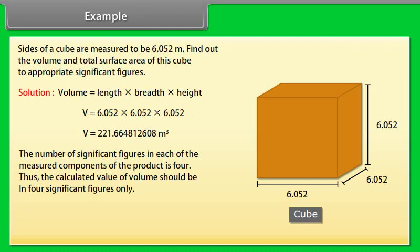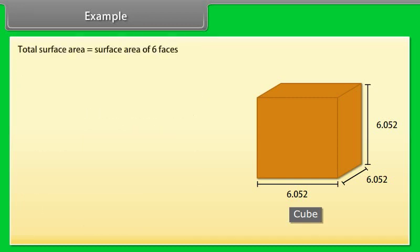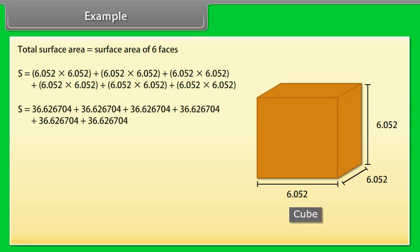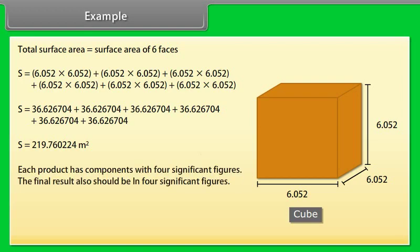Thus V is equal to 221.7 meter cube. Total surface area is equal to surface area of six faces. After calculation we get S is equal to 219.76 meter square. Each product has components with 4 significant figures. The final result also should be in four significant figures. Thus S is equal to 219.8 meter square.